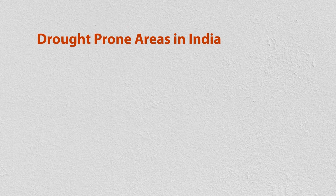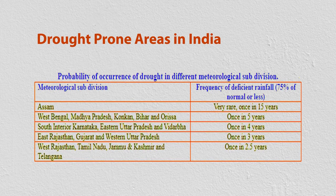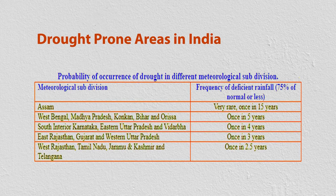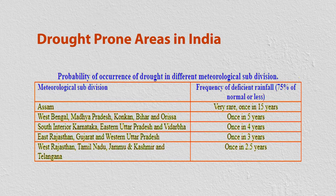Then there are the least drought-prone areas: most coastal areas and the northeastern areas, as they are not that prone to drought — determined on the basis of rainfall data. Here is a table from RBIS showing that Assam has a very rare chance of drought — once in 15 years. Meteorological subdivisions like West Bengal, Madhya Pradesh, Konkan, Bihar, and Odisha face drought once in five years. South Interior Karnataka, Eastern Uttar Pradesh, and Vidarbha face it almost every four years. East Rajasthan, Gujarat, West Rajasthan, Tamil Nadu, Jammu and Kashmir, and Telangana face it once in every two and a half years. This is the average frequency of deficient rainfall that causes drought.